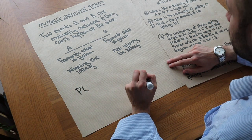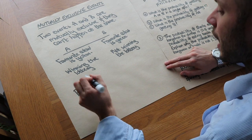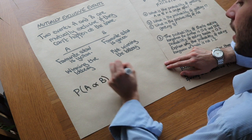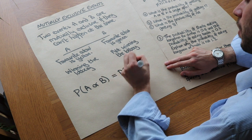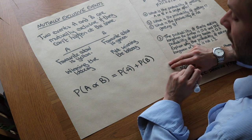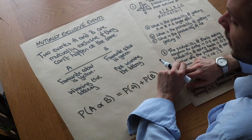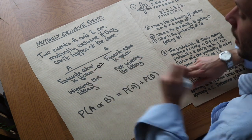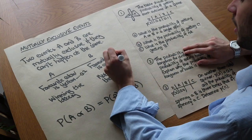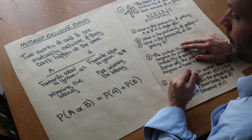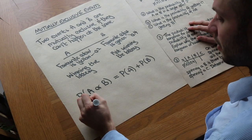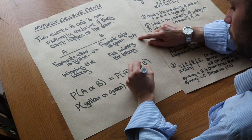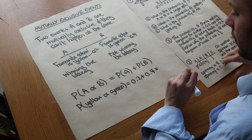Here's the important formula we'll need. If A and B are mutually exclusive, then the probability of A or B happening is the probability of A plus the probability of B. For example, if the probability that someone's favourite colour is yellow is 0.2 and the probability it's green is 0.4, then the probability that it's yellow or green is 0.2 plus 0.4, which equals 0.6.